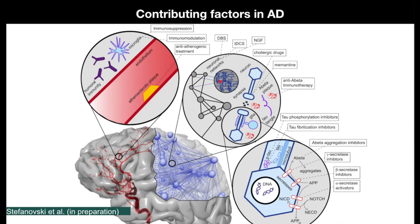Neurotransmitters also play a role in the multifactorial processes of Alzheimer's disease. Acetylcholine and glutamate play particular roles. Acetylcholine is decreased, leading to memory impairment, and acetylcholinesterase inhibitors are used to increase acetylcholine concentration in the synaptic cleft. In contrast, glutamate transmission is increased, leading to hyperexcitation and excitotoxic cell death. To relieve symptoms, NMDA antagonists such as memantine are used to decrease glutamate transmission.